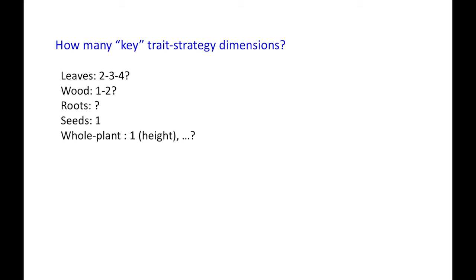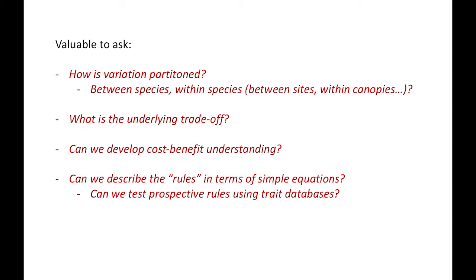My plea is simply: when looking at trait variation in your data, ask how the variation is partitioned — is it between species or within species? If within species, does it vary along environmental gradients, within canopies? With my plant strategy hat on, I want to know what is the underlying trade-off generating this variation, can we develop a cost-benefit understanding, and can we describe the rules in simple equations? If we can describe those rules, we can model them, and potentially test them using trait databases. This is an exciting time for functional ecology, bringing together modellers and empirical scientists to make progress.